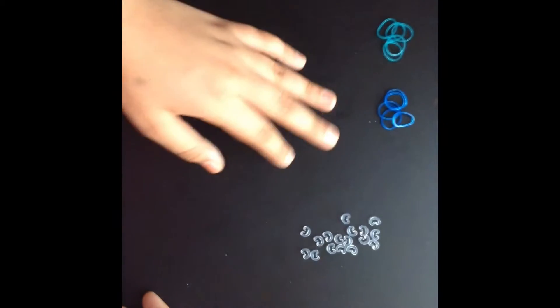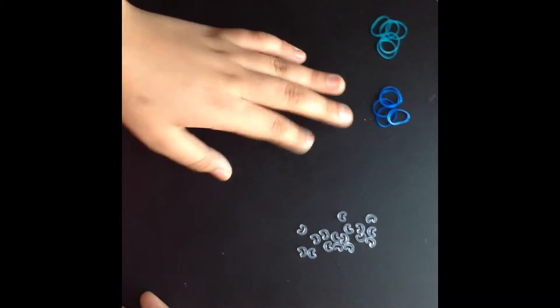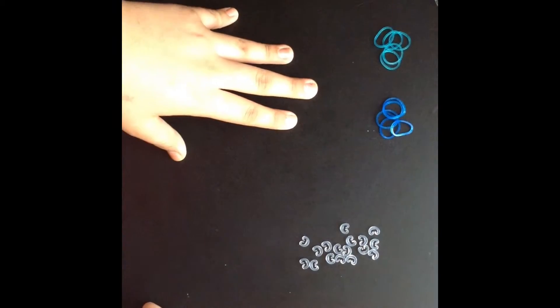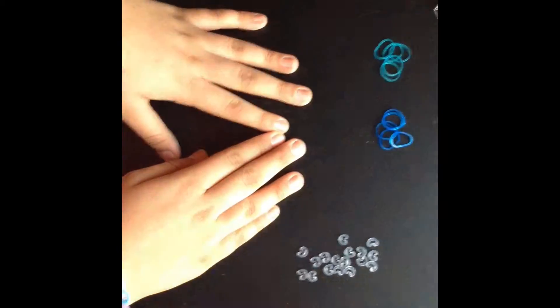I have blue, light blue and white. So I have 3 colors and in each color I have 5 bands. So let's get started.